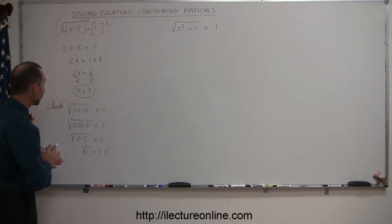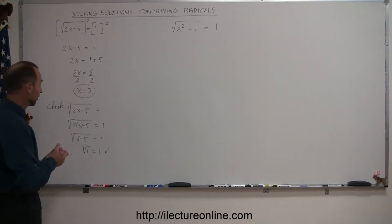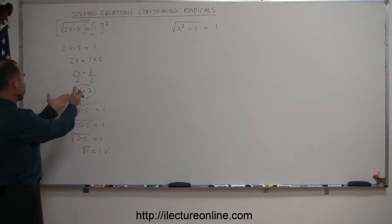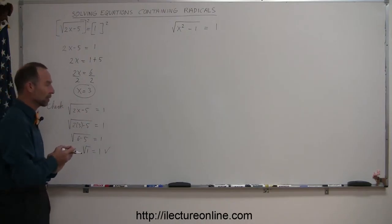Now, what you're usually looking for is, sometimes when you plug the solution back into the radical, you may end up with a number underneath the radical that's less than 0. You cannot take the square root of something less than 0, and that means that the solution that you found is not correct. It doesn't count. But in this case, everything looks good. Solution is x equals 3.